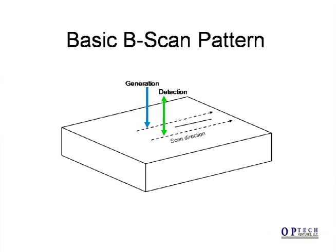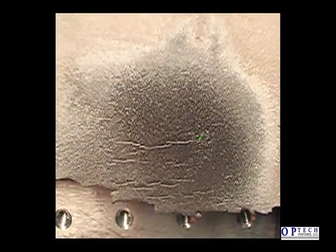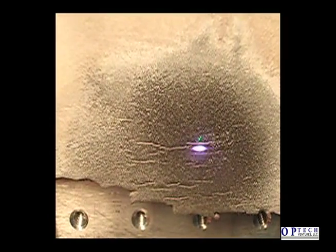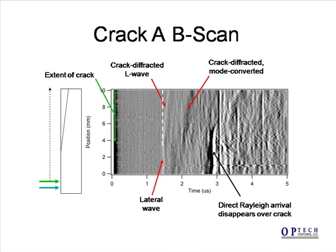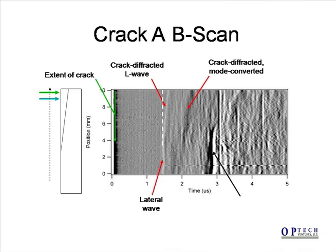For scanning, both beams are moved parallel to an individual crack. In this video, we show both beams being scanned along a single crack. The beam spacing is 4 mm. The generation spot looks large only because it is overexposed. This is a B-scan of the crack shown in the previous video. The crack starts at 4 mm and deepens at larger scan positions. Note that the direct Rayleigh wave arrival disappears as the crack opens, and the crack manifests itself as an increasing time delay of the lateral wave.